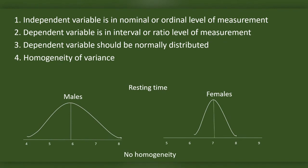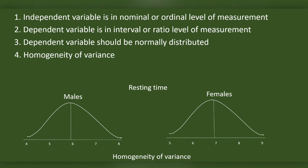Scores of the dependent variable in each of the two categories should have homogeneity of variance. For example, in male data the spread of resting time scores is mean ± 2, and in female data the spread is mean ± 1 — that would be no homogeneity of variance. Where the spreads are similar across groups, there is homogeneity of variance.